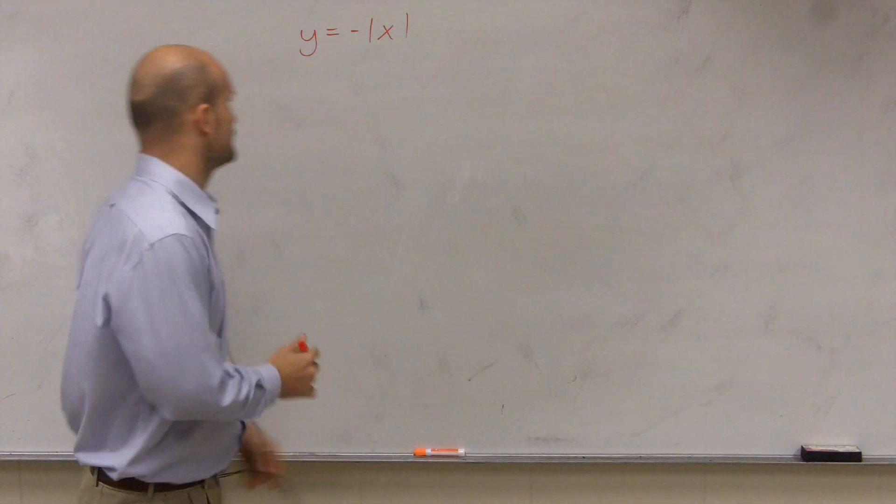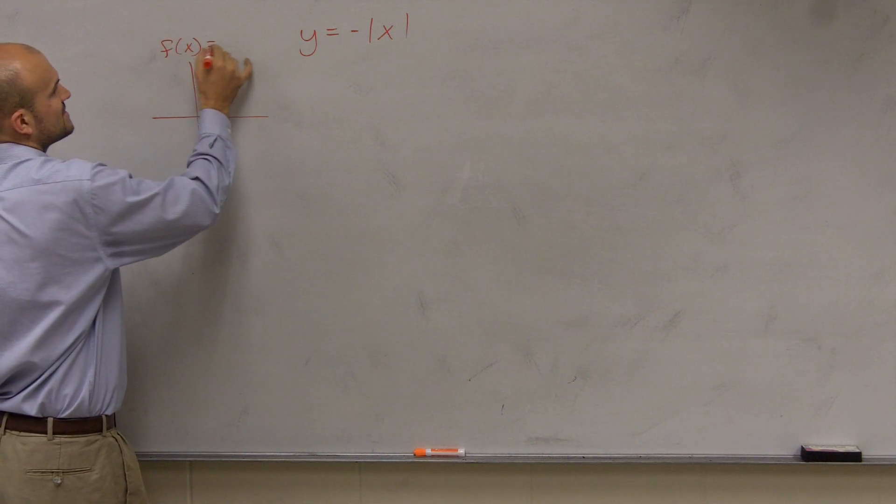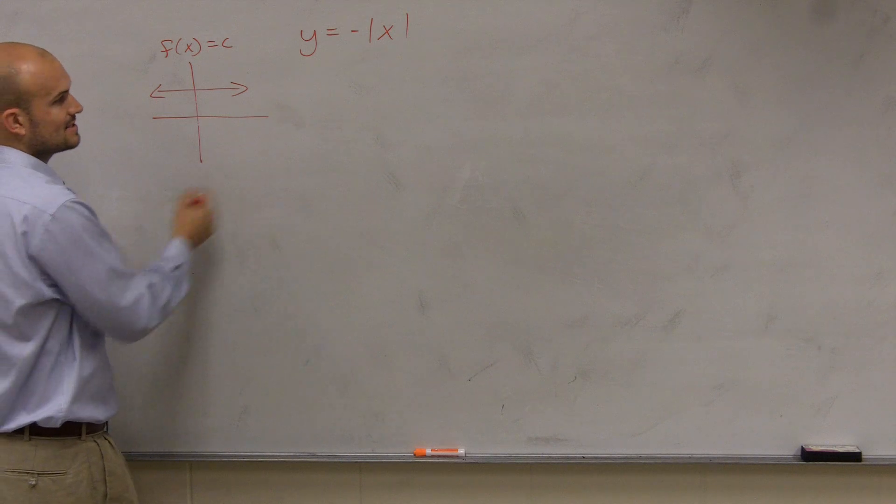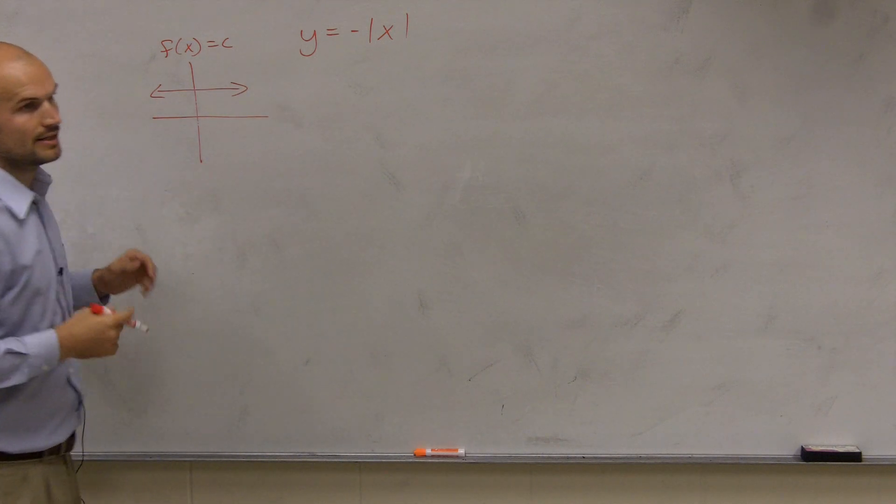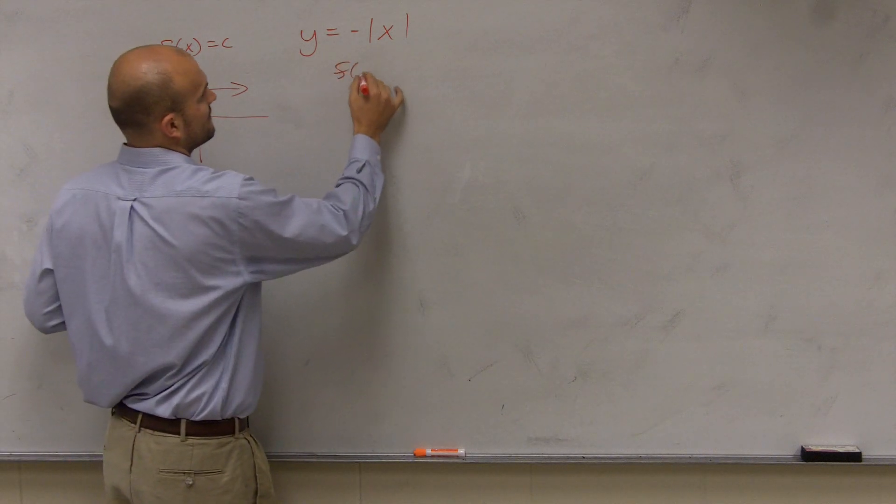And Cody, this will be a great review for you. We have the first function, which we call the constant function. If we set our function equal to a number, that would be a horizontal line. If you could say f(x) equals a number. Or we had the identity function, which looked like this.